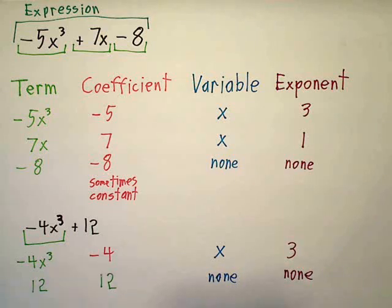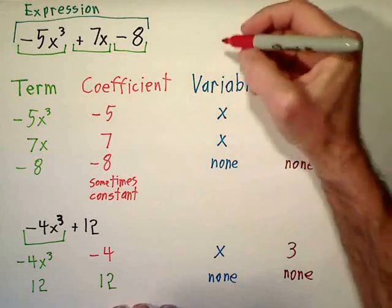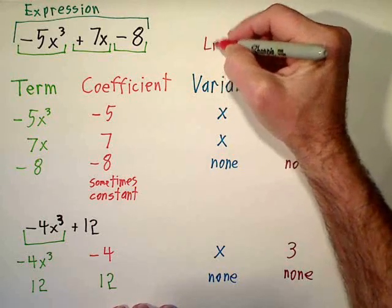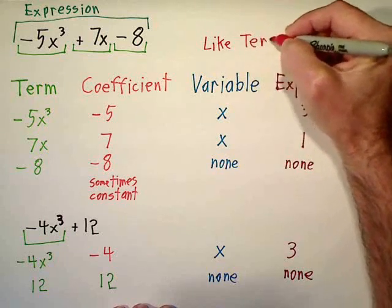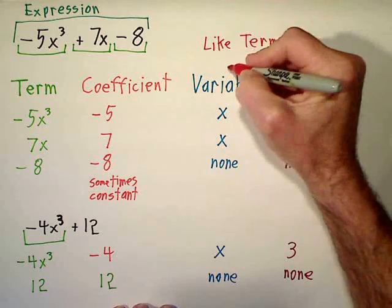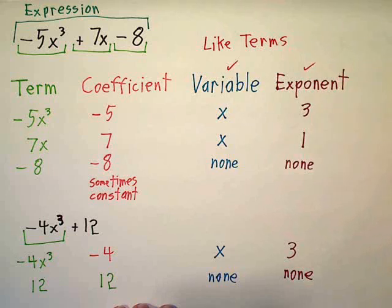And part of why we go through this is a lot of times we have you combine like terms. And like terms have the same variable and exponent.